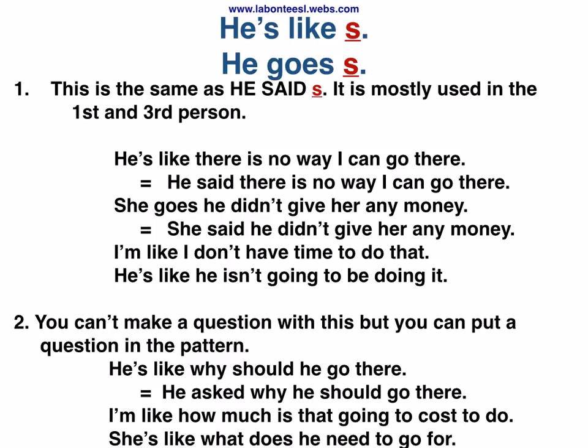Pattern: 'He's like' sentence / 'He goes' sentence — this is the same as 'he said' sentence, mostly used in the 1st and 3rd person. He's like, there is no way I can go there. He said there is no way I can go there. She goes, he didn't give her any money. She said he didn't give her any money.